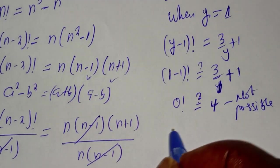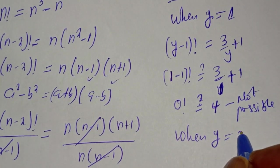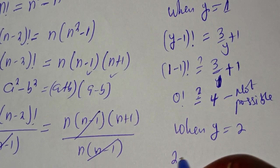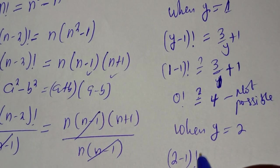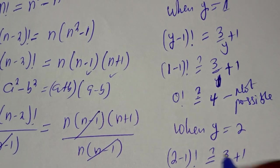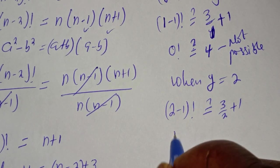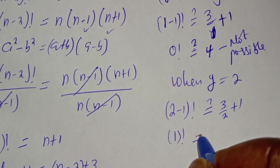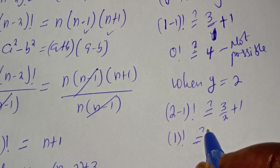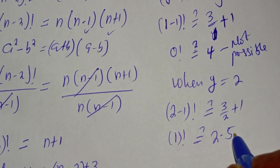So let's check when y equals 2: y minus 1 factorial is equal to 3 over y plus 1. Then 2 minus 1 factorial is equal to 3 over 2 plus 1, which gives 1 factorial equal to 2.5. We can see that this is not possible again.